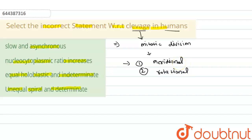So there are different types of division or cleavage taking place in the human, so it is called slow and asynchronous.